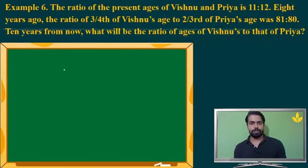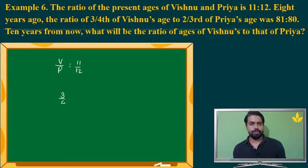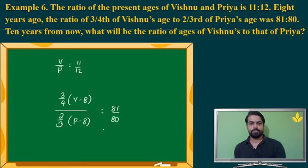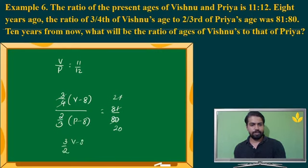Let's go to the next question. The ratio of the present ages of Vishnu and Priya is equal to 11 is to 12. 8 years ago, 3/4 of Vishnu's age 8 years ago and 2/3 of Priya's age 8 years ago were in a certain ratio — simplifying gives V minus 8 by P minus 8 equals 27 by 20. Instead of giving a simple ratio, they complicated it — that's all.